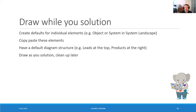Drawing takes a lot of practice. I have defaults for individual elements — I always draw objects in a system landscape exactly the same way, to the point I can do it blindly. In PowerPoint I copy-paste these elements — I create one default, put it at the top, and copy-paste it throughout. Have a default diagram structure so you don't have to think. Draw dirty as you solution and clean up later — you have limited time, so get your solution out fast. If you run out of time, at least you have a solution.